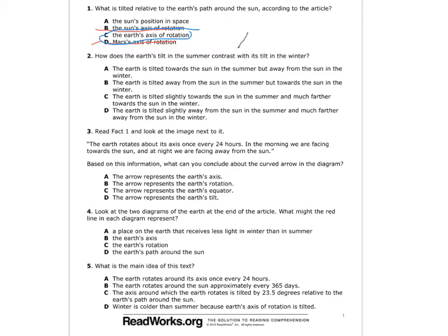Number two: how does the earth's tilt in the summer contrast with its tilt in the winter? Choice A: the earth is tilted towards the sun in the summer, but away from the sun in winter — that's true. Choice B: the earth is tilted away from the sun in summer — we know that's not true. Choice C: the earth is tilted slightly towards the sun in the summer, and much farther towards the sun in the winter — no. Choice D: the earth is tilted slightly away from the sun in the summer, but much farther away in the winter — no. So, although A through D had similar answers, we must go back to A.